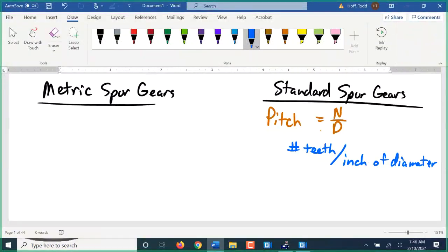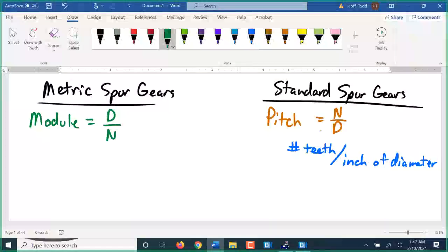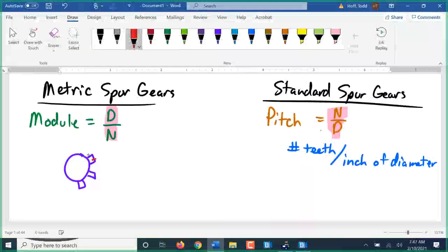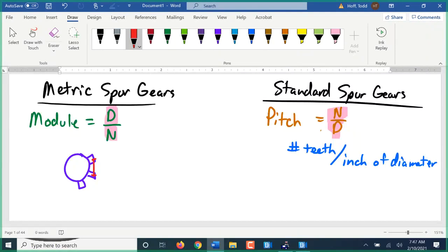In the metric module system, there's something called the module. The module M equals diameter divided by the number of teeth. Notice it's just the opposite. Pitch was number of teeth divided by diameter. Module is diameter divided by the number of teeth, which actually makes more sense. Diameter divided by number of teeth is inches per tooth. When we change that into a circular module, the metric system changes it into a circular pitch. It actually does give you distance from the center of one tooth to the center of the next.